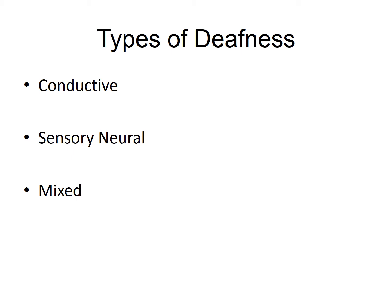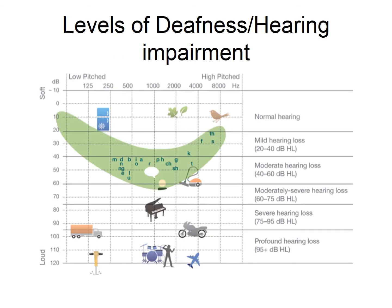Now we will go on to look at levels of deafness, as these can vary from person to person and can vary between the right and the left ear, which may not always have an identical hearing loss. On the next slide, you will see a pictorial representation of an audiogram showing the different levels of deafness or hearing impairment.